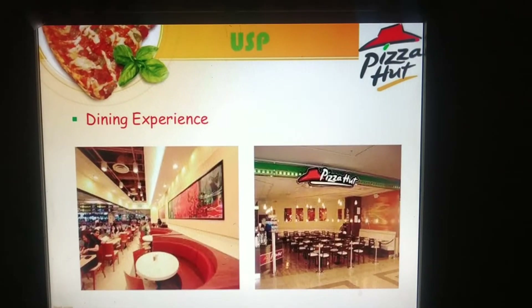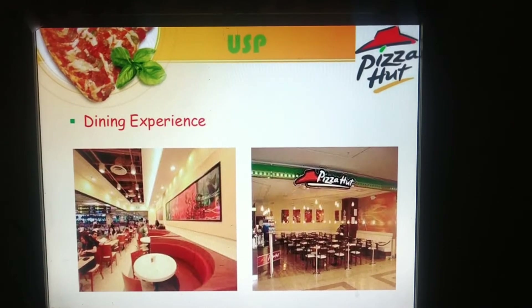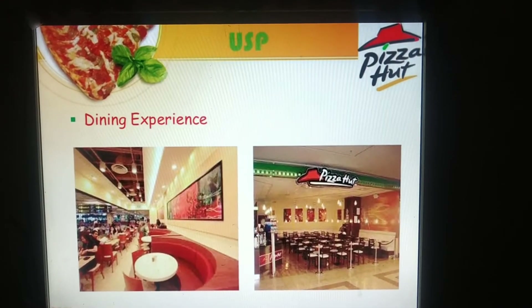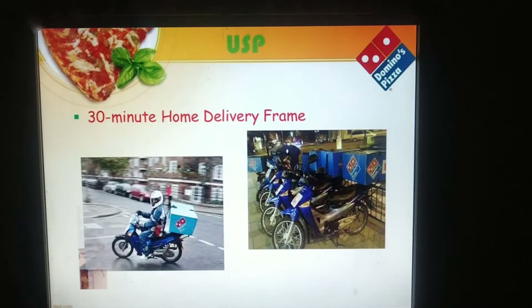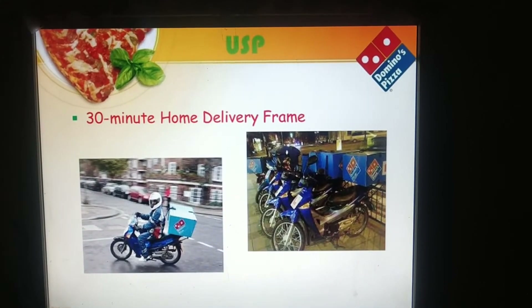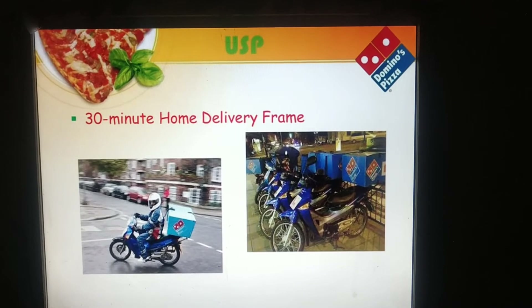Next is the USP — Unique Selling Proposition. The USP of Pizza Hut is the dining experience, whereas the USP of Domino's Pizza is the 30-minute home delivery guarantee.